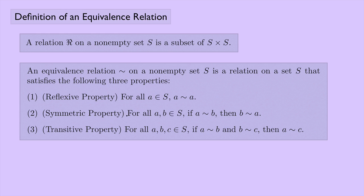The symmetric property: for any elements A and B in the set S, if A is equivalent to B, then B is equivalent to A. The transitive property: for all elements A, B, and C in the set S, if A is equivalent to B and B is equivalent to C, then A is equivalent to C.